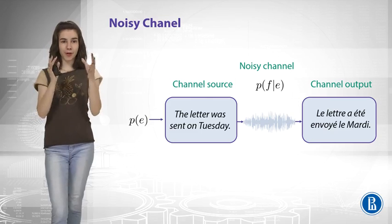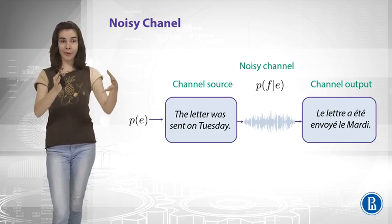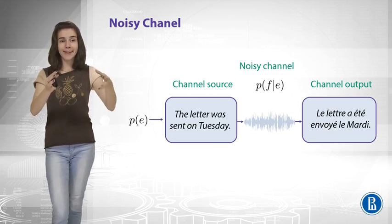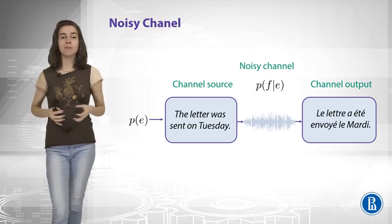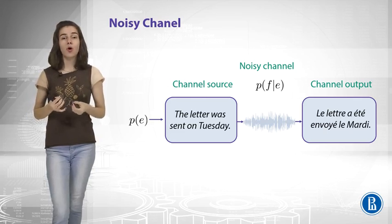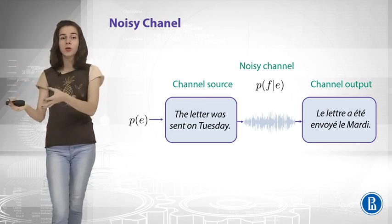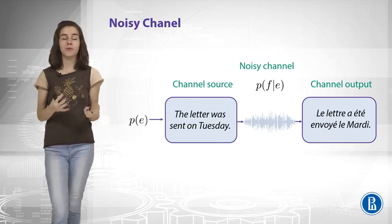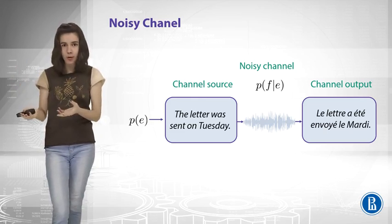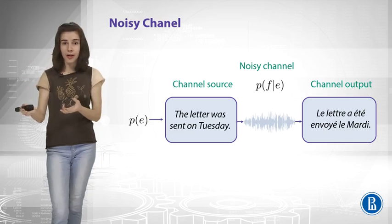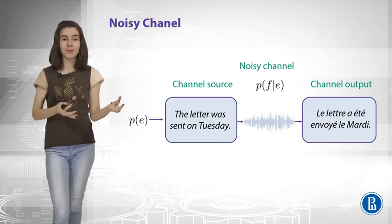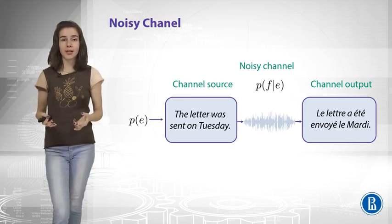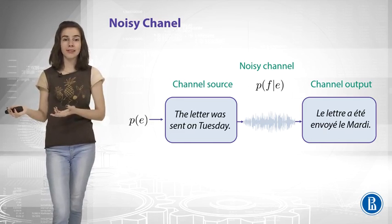So, you have your source sentence and you have some probability of this source sentence. And then it goes through the noisy channel. The noisy channel is represented by the conditional probability of what you get as the output given your input for the channel. So, as the output, you obtain your French sentence. So, let's say that your source sentence was spoiled with the channel and now you obtained it in French.